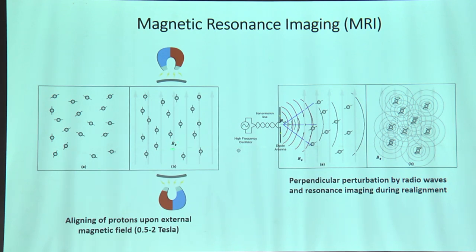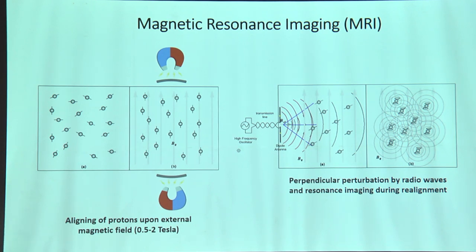You then perturb this alignment perpendicularly with a radio wave source. The moment you do this, the protons shift, and you give them pulses of radio waves — like pushing someone out of the line. That person shouts, and this 'shout' comes out as a resonance detected by the receptor. That is what magnetic resonance imaging is all about.